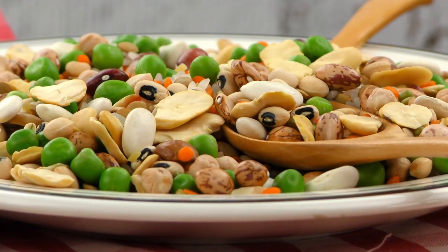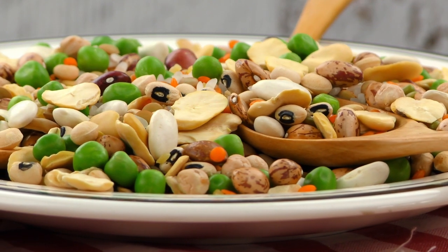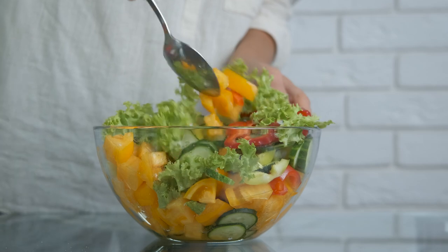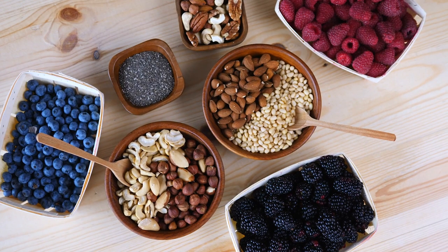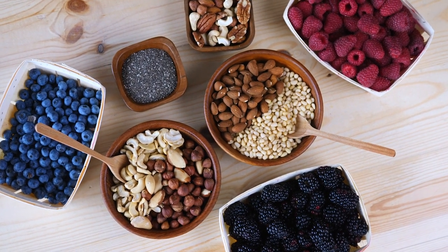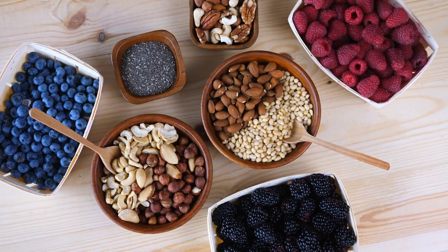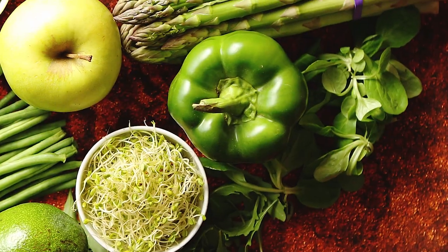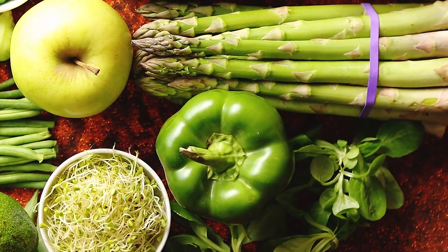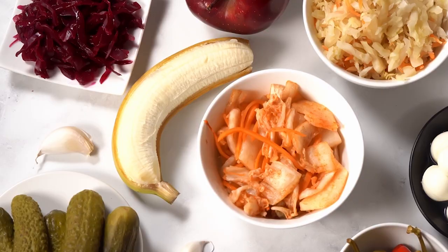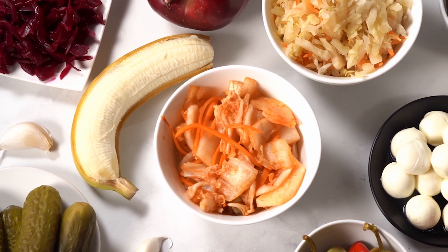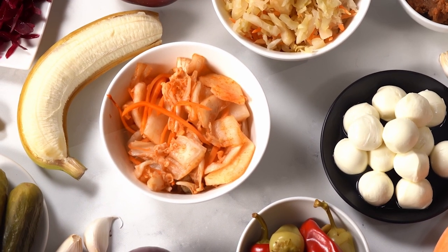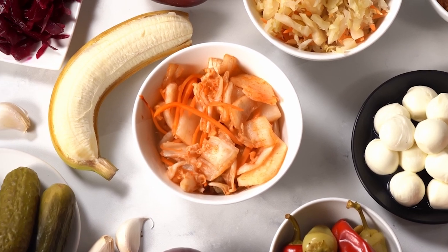High-fiber foods — such as legumes, fruits, vegetables, nuts, and seeds — help promote proper digestion and stimulate the growth of beneficial bacteria in your intestines. They also help keep you feeling full for longer, which can aid in weight loss. Prebiotic foods — such as asparagus, garlic, onions, and bananas — are special types of fibers that feed the beneficial bacteria in your gut, helping to boost their activity and promote a balanced gut flora.